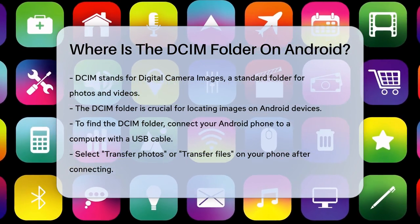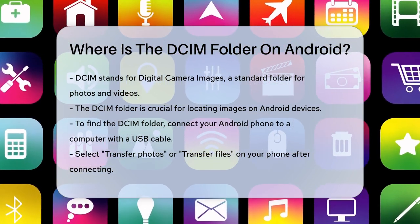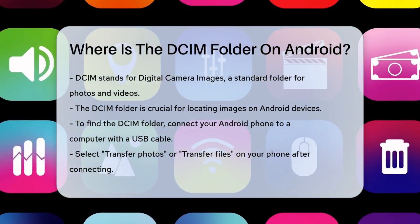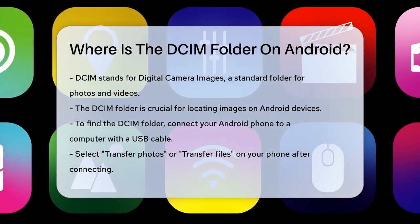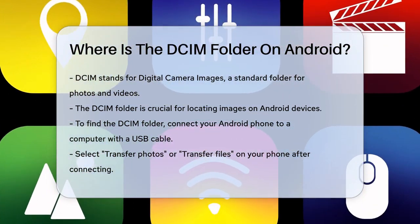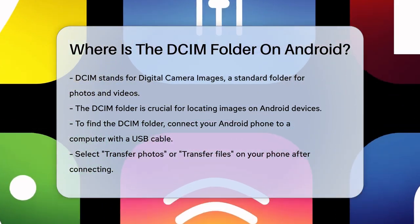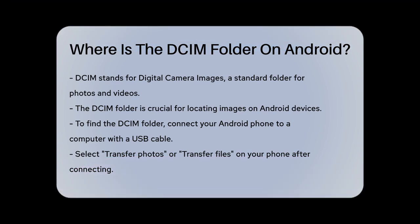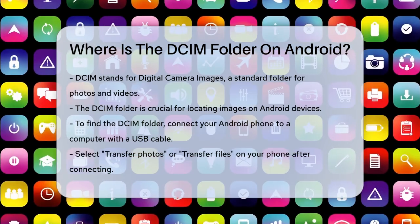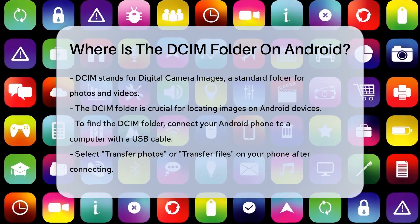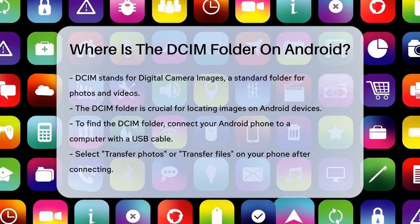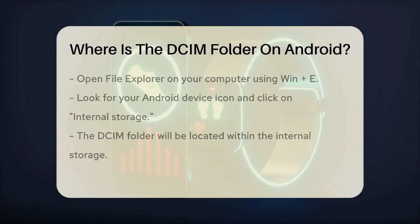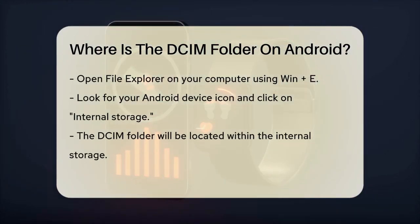To find the DCIM folder on your Android device, you have a few options. One way is to connect your phone to your computer. Connect your Android phone to your computer using a USB cable. On your phone, tap the Transfer Photos or Transfer Files option.